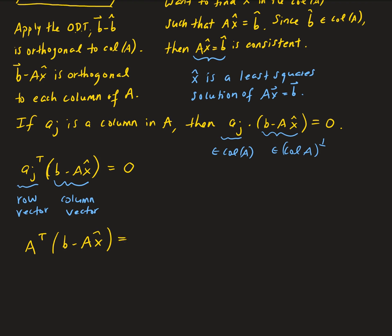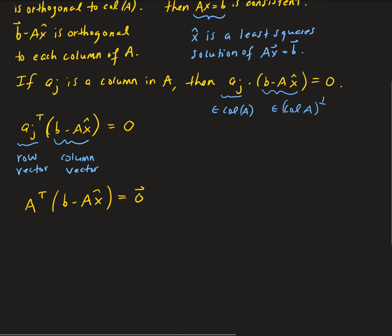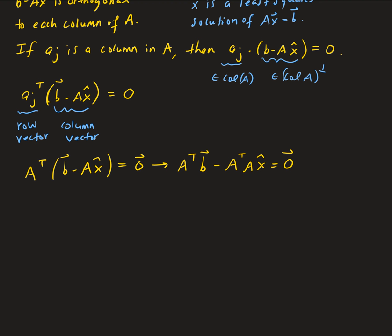So this leads us to A transpose times B minus AX hat equals the zero vector. From here we can rewrite this as A transpose B minus A transpose times A times X hat, which gives us A transpose times A times X hat equals A transpose B.